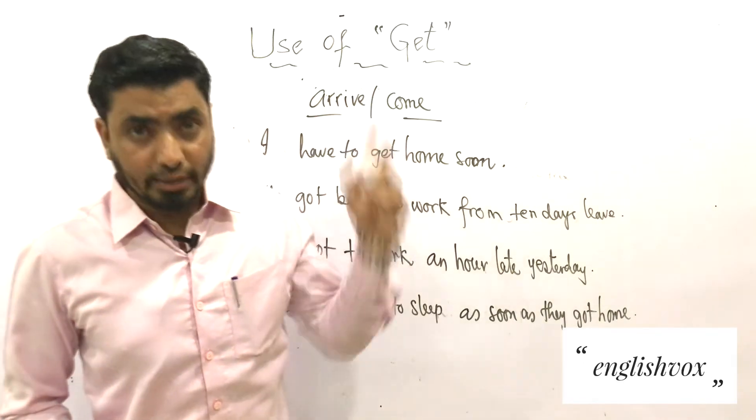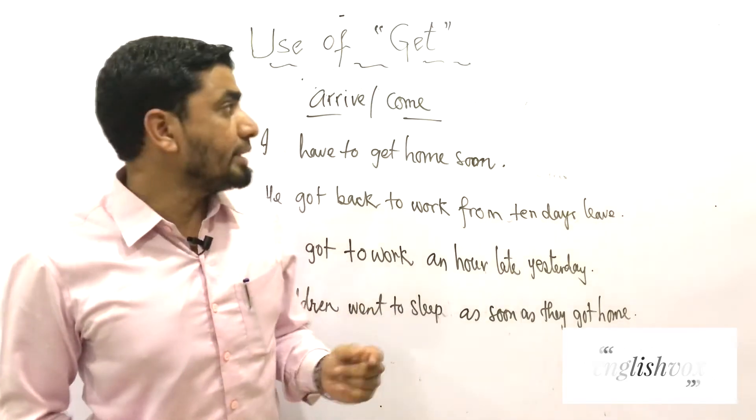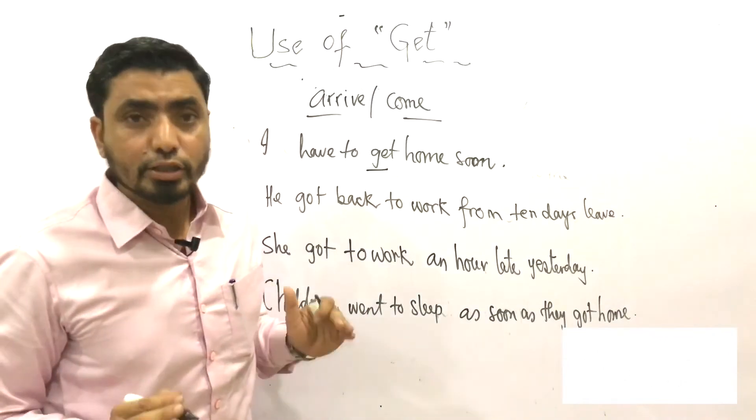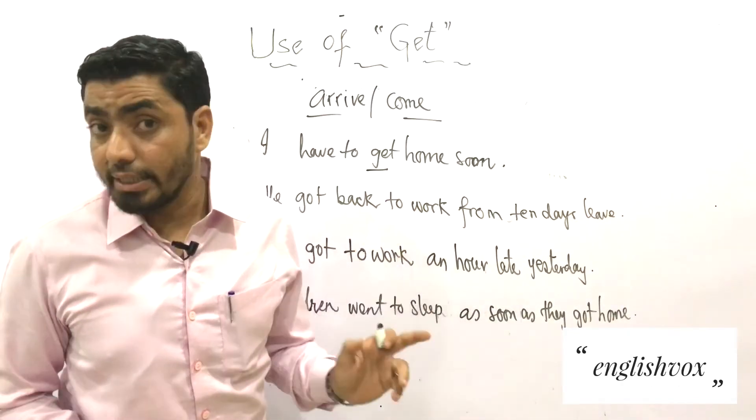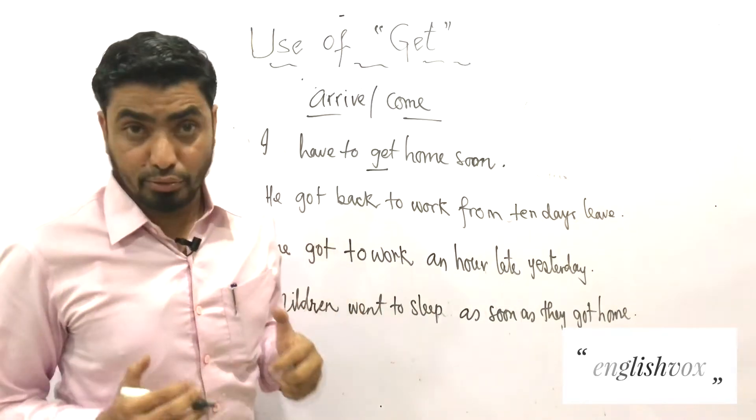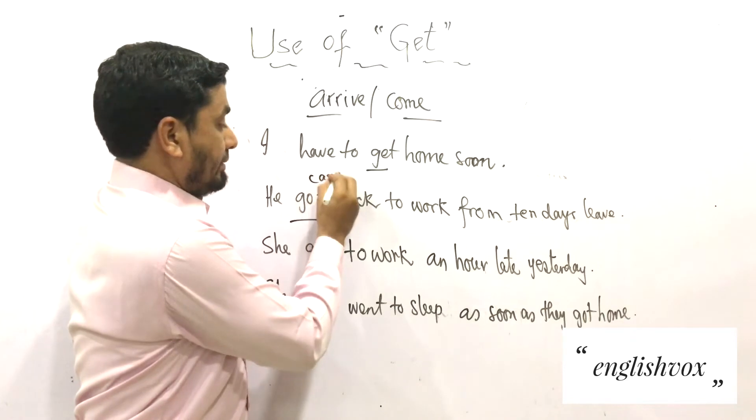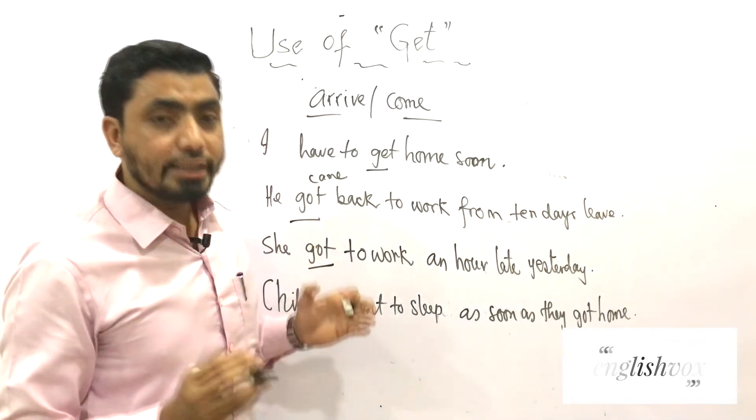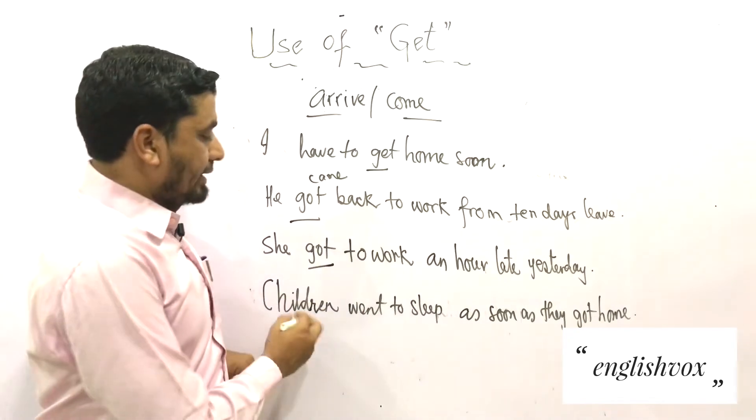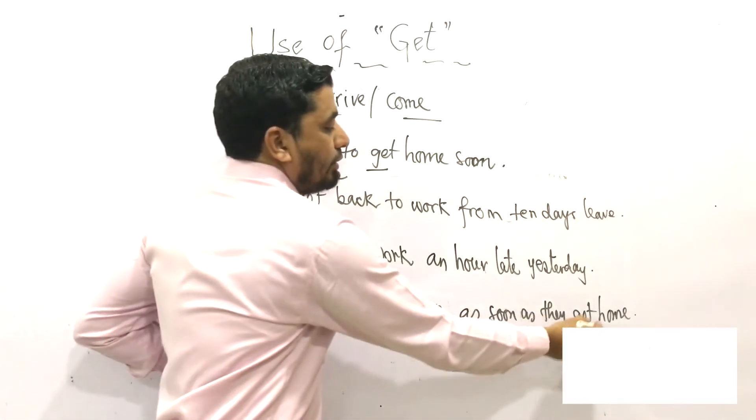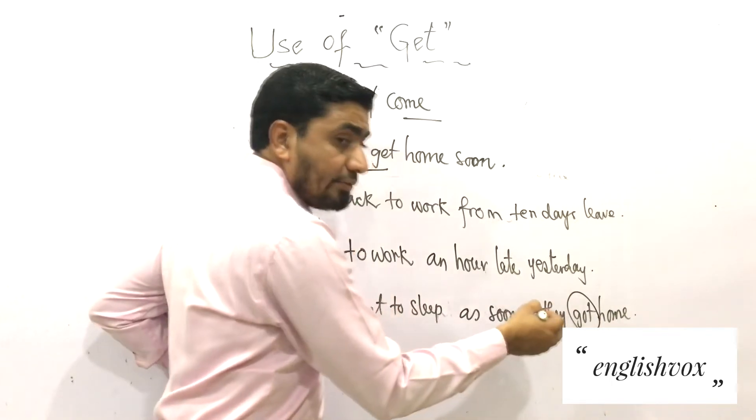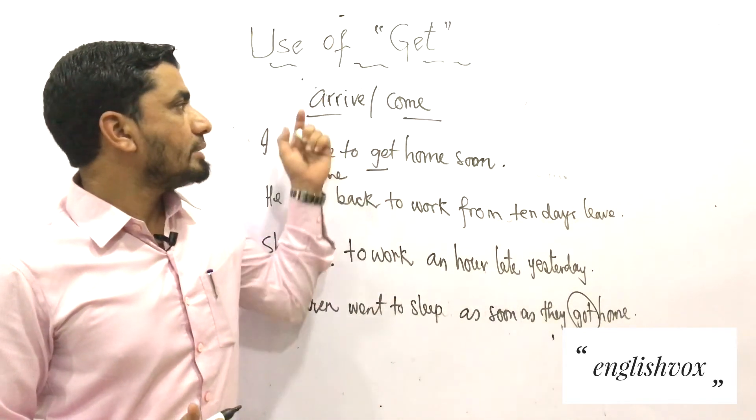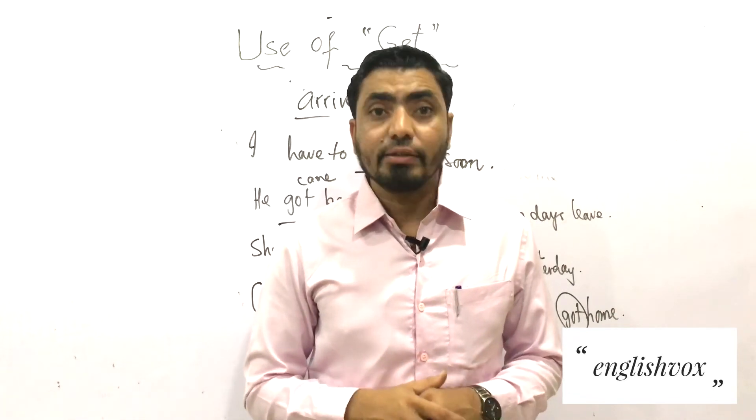First example: 'I have to get home soon', which means 'I have to come or arrive home soon'. Second: 'He got back to work from ten days leave', which means he came back to work. The third example is 'She got to work an hour late yesterday', which means she arrived or came to work an hour late yesterday. And the last is 'Children went to sleep as soon as they got home', which means they reached home, they arrived home, and went to sleep. So these were the examples that show the meaning of 'arrive'.